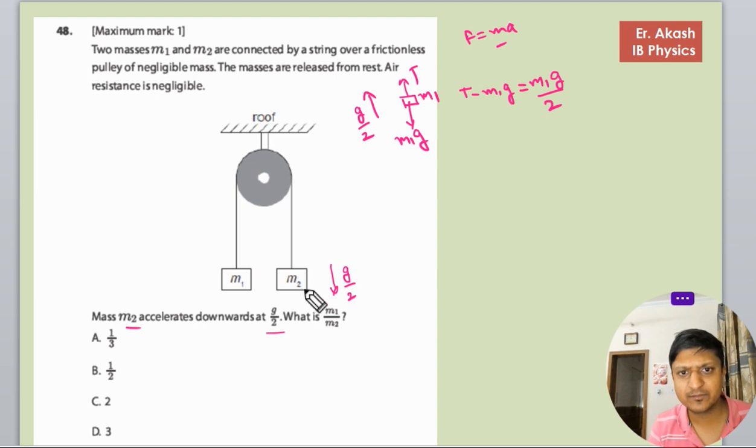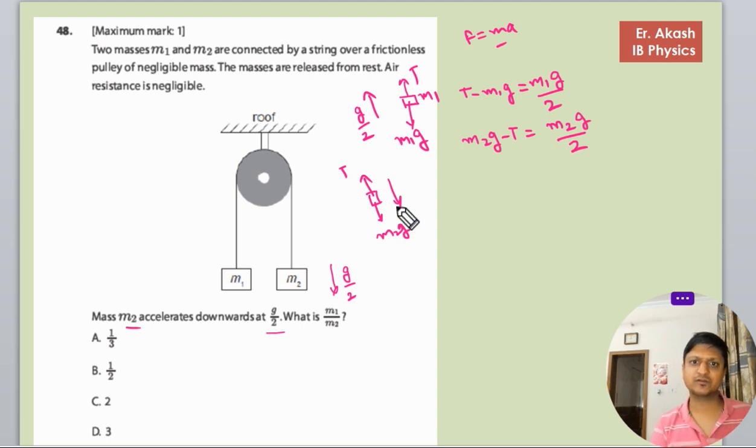For this body M2, M2 is going downwards, so the forces are M2·g and T. We write M2·g minus T equals M2·(g/2) because it's going down with acceleration g/2. Now we will add both equations.